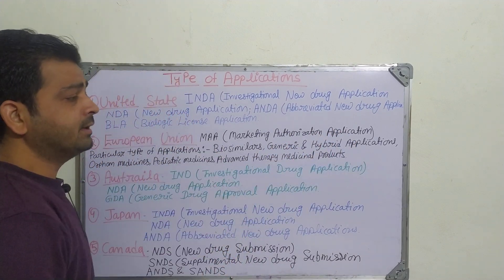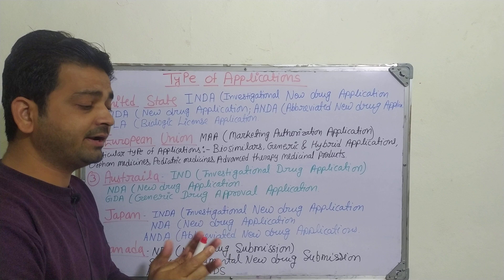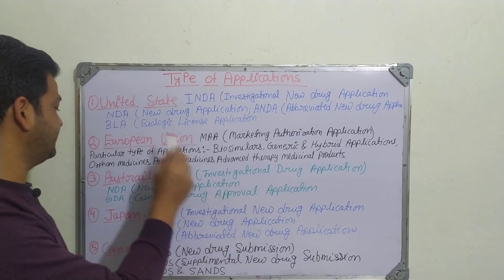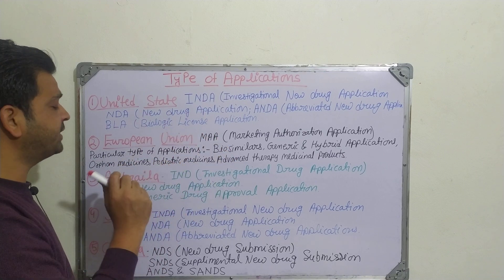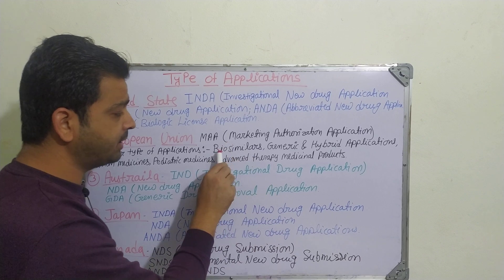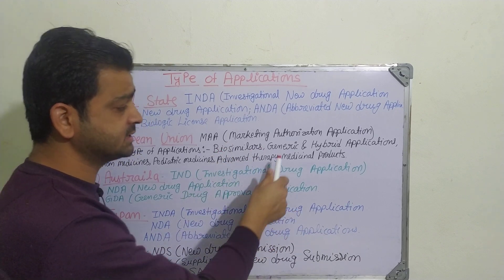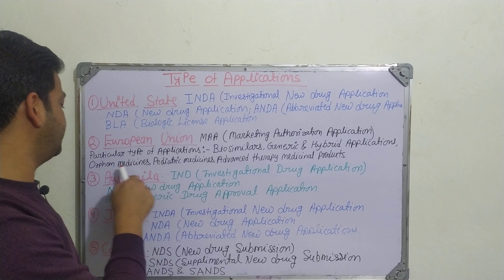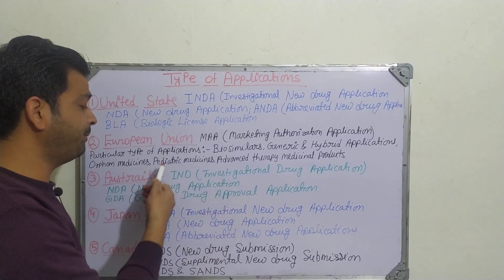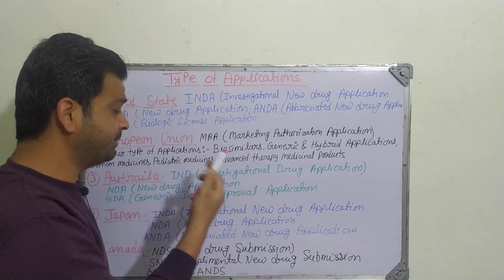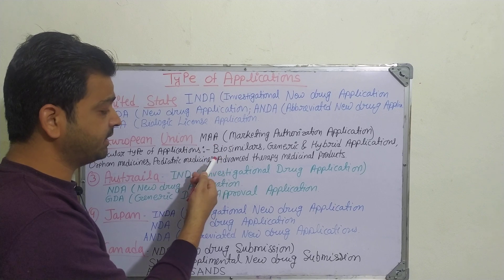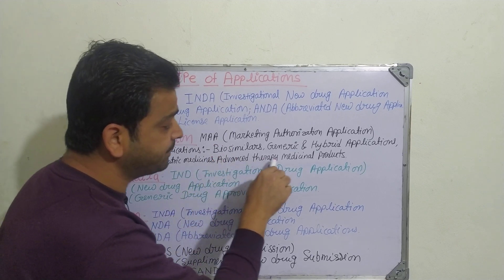Apart from the MAA, the European Union has several specific application types available: biosimilar applications, generic and hybrid applications, orphan medicine applications for rare diseases, pediatric medicine applications for children and infants, and Advanced Therapy Medicinal Products (ATMP) applications. Each of these categories has its own separate application process.